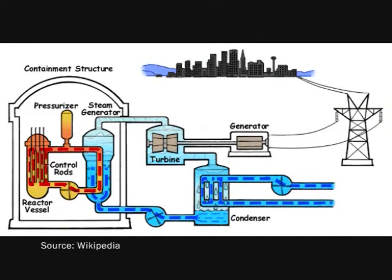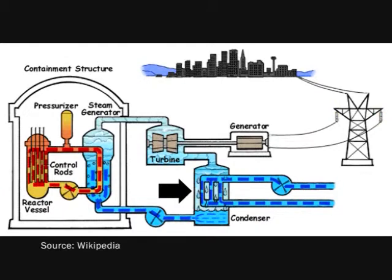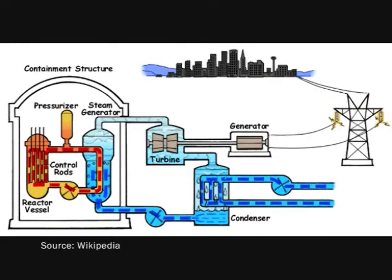The steam, meanwhile, is condensed back into water here, using cool water drawn from a nearby lake or river. The condensed water is then pumped back into the steam generator and the cycle starts over.